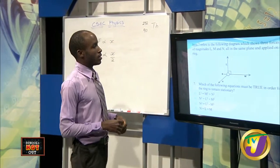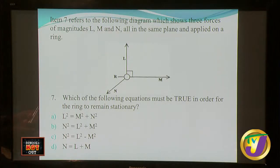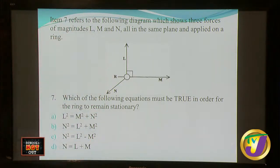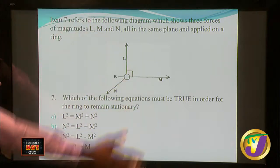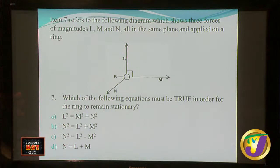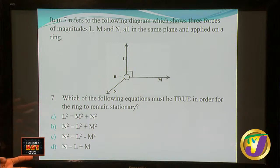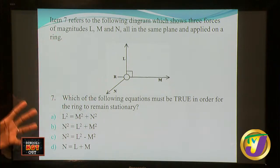Item seven refers to a diagram showing three forces of magnitudes L, M, and N, all in the same plane applied to a ring. When dealing with planar or coplanar forces, it is not a three-dimensional diagram — not vertical, horizontal, and in or out of the board. It is in one plane: one points this way, one that way, and one that way. Which of the following equations must be true for the ring to remain stationary? Remember: if forces act on something and it needs to remain stationary, the forces must balance. L and M are perpendicular to each other.